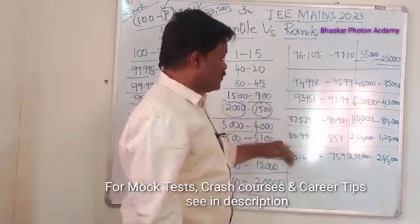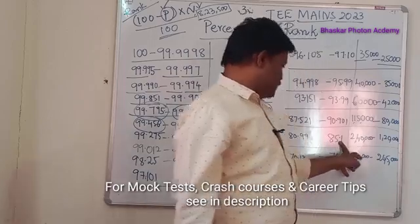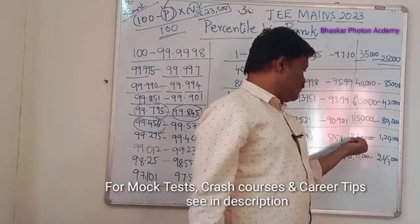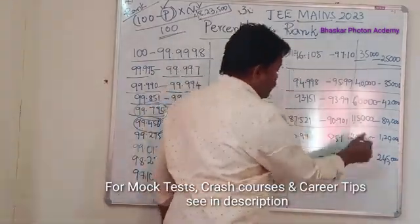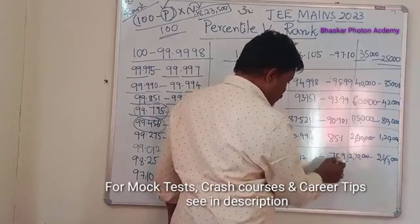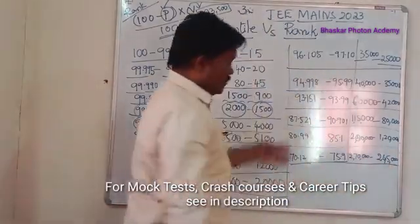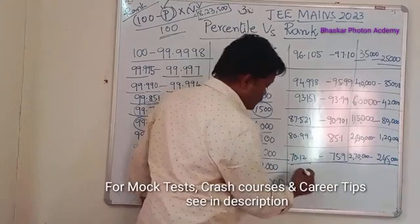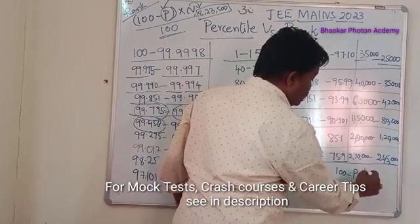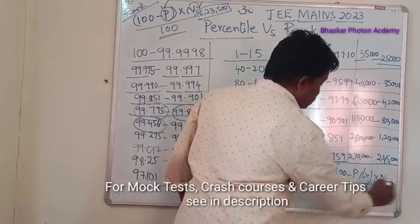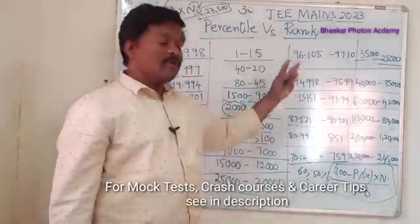If you want to calculate your rank, use the formula. For 85 to 80 percentile, ranks were around 1,20,000 to 2,40,000 — possibly even around 2,00,000. For 75.9 to 70 percentile, ranks are around 2,40,000 to 2,70,000. For even lower scores like 60 or 50 percentile, apply the formula: (100 minus percentile) into number of candidates appeared, divided by 100 — that gives you the rank.